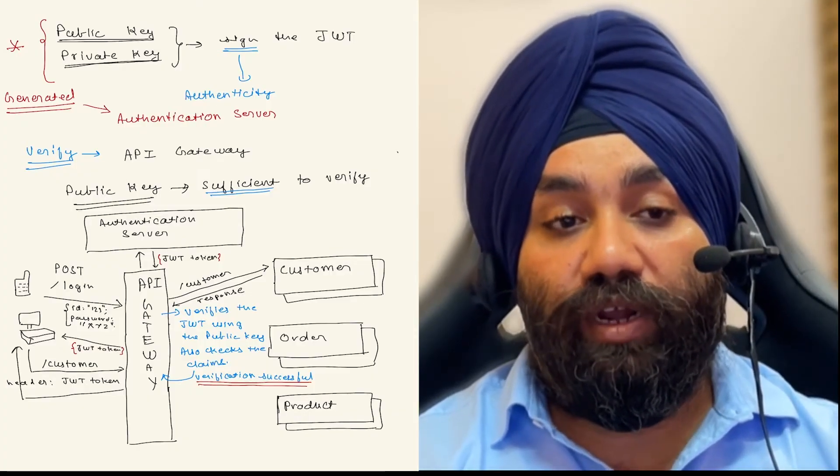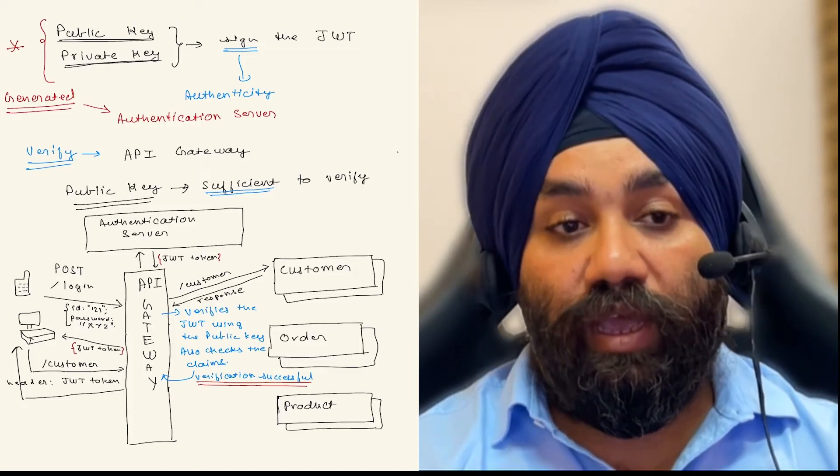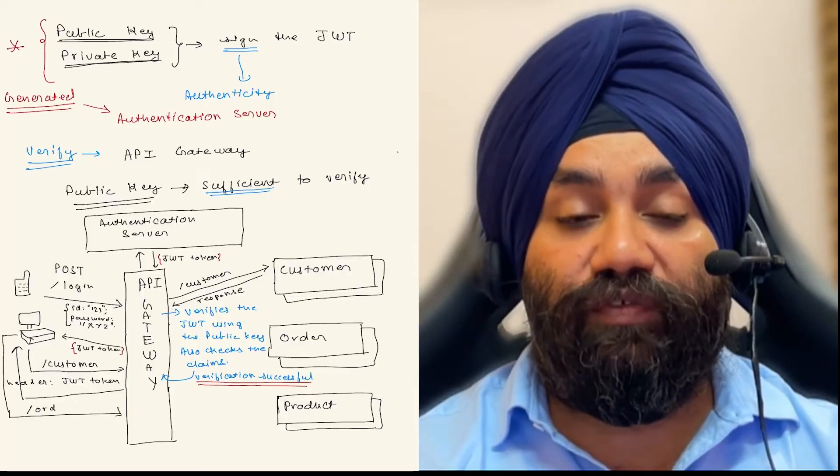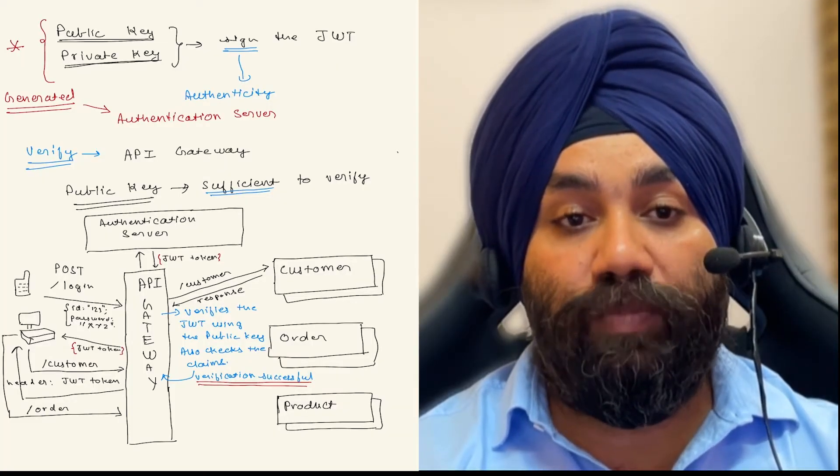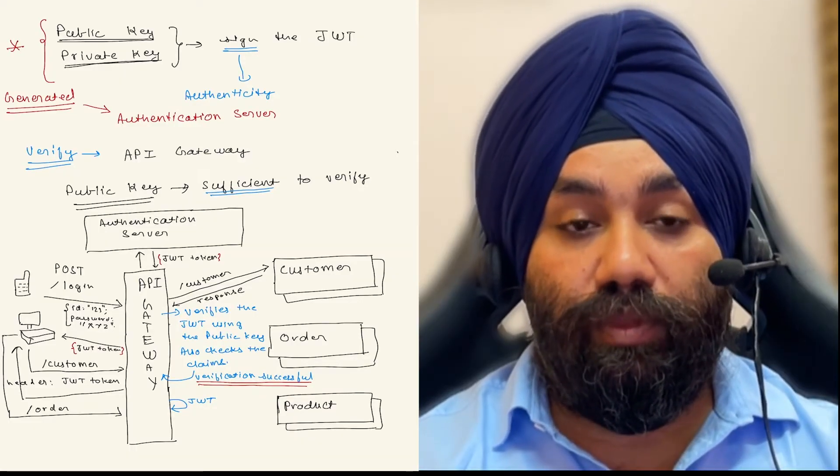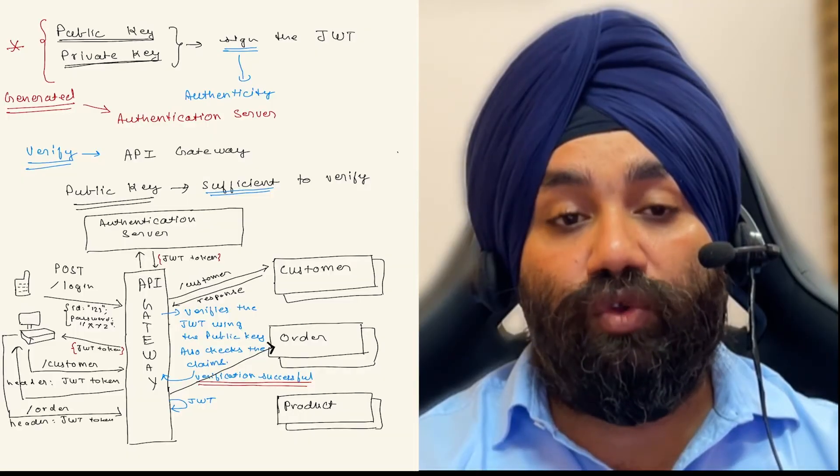And then let's take another example. For example, if you want to call order service, again we need to send our JWT as part of the header and it will again get verified using the public key. And then this request will go to the order service.